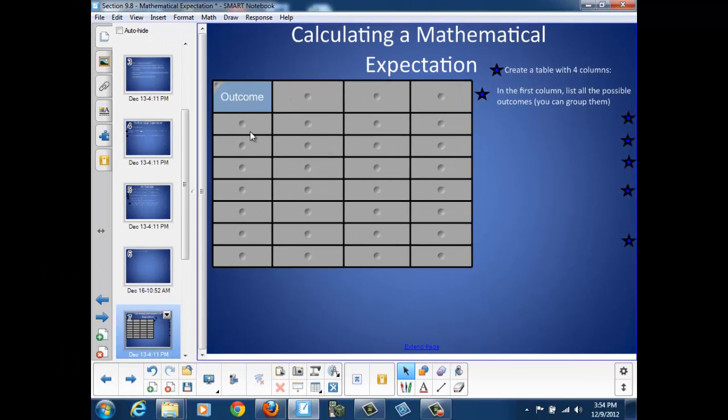So the first column is outcomes. Now, in our game, we're rolling the die, and our outcomes are rolling a 1, a 2, a 3, a 4, a 5, or a 6.